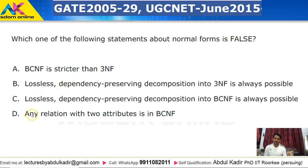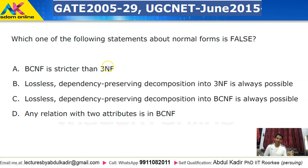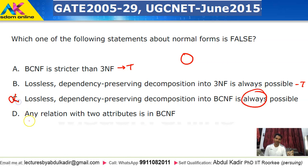The next question asks which statement about normal forms is false. Statement A: BCNF is stricter than 3NF — true, since BCNF requires only that left-hand side be a super key, while 3NF allows the right-hand side to be a prime attribute. Statement B: lossless dependency-preserving decomposition into 3NF is always possible — true. Statement C: lossless dependency-preserving decomposition into BCNF is always possible — false. Statement D: any relation with two attributes is in BCNF — true. Answer is C.